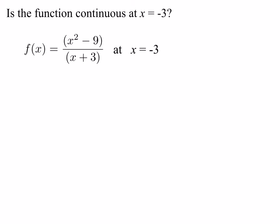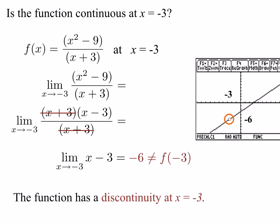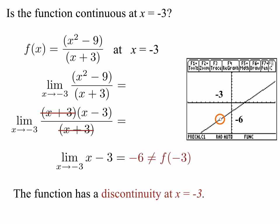Is the function f of x equals x squared minus 9 over x plus 3 continuous at x equals minus 3? Applying the definition of continuity, we check the limit as x goes to minus 3 of x squared minus 9 over x plus 3. We factor: the numerator factors to x plus 3 times x minus 3, so the x plus 3 terms cancel, leaving the limit as x goes to minus 3 of x minus 3. Plugging in minus 3 gives minus 6, which is not equal to f of minus 3 because this function is not defined at minus 3. Looking at the graph, there's a hole at x equals minus 3, so this function has a discontinuity there.